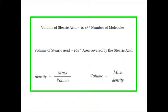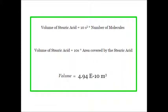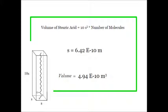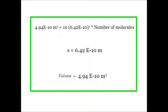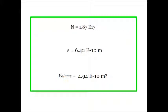But that's not what we're looking for. We're trying to find Avogadro's number, and we are making progress. Volume of stearic acid: done. S, the dimension of one side of the molecule: found. Now we need to find the number of molecules, which we can do because we know the volume and S. Volume is equal to 10S³ times the number of molecules. Plugging in our values, there are 1.87 × 10¹⁷ stearic acid molecules in that drop.